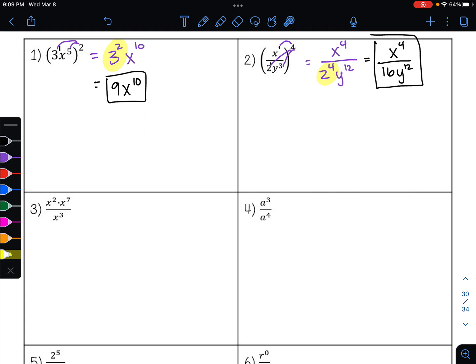On example 3, I have like bases. What is my base? Here my base is x. I'm going to start with my numerator. I'm going to keep my base of x and I'm going to add my exponents. What's 2 plus 7? 9.